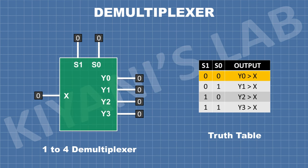When select line S0 and S1 both are zero, the output Y0 is selected. When select line S0 is one and S1 is zero, the output Y1 is selected. When select line S0 is zero and S1 is one, the output Y2 is selected. When select line S0 and S1 both are one, the output Y3 is selected.